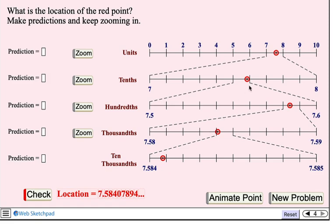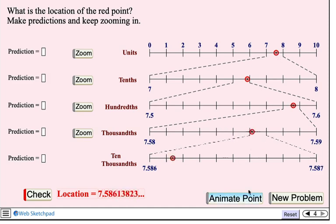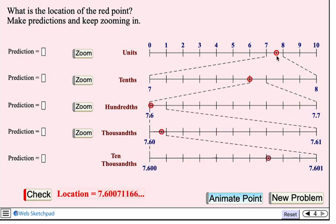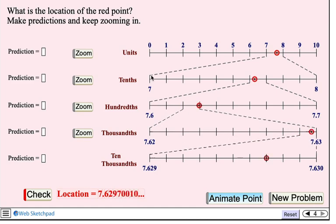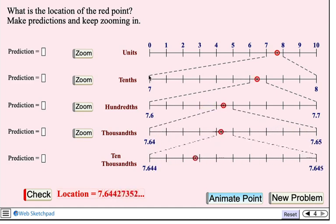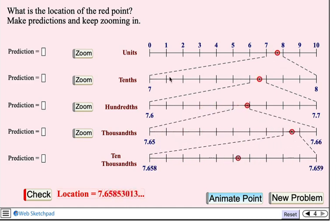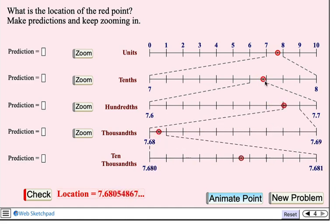And something else that's really fun to do here is to press the animate point button, which is going to slowly move this point. And let's watch what happens when this point moves. If we're just looking at this point, we can sense it's moving, but it's really slow. But here when we're seeing that same point move, when it's magnified and we're seeing tenths, it's moving faster.